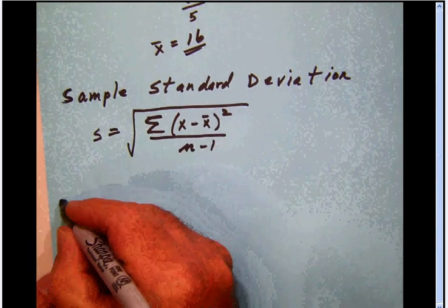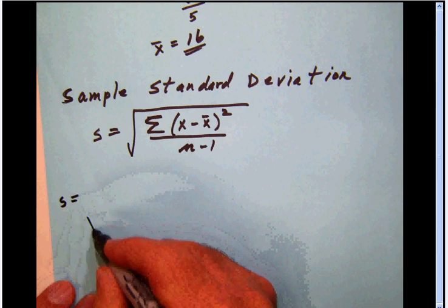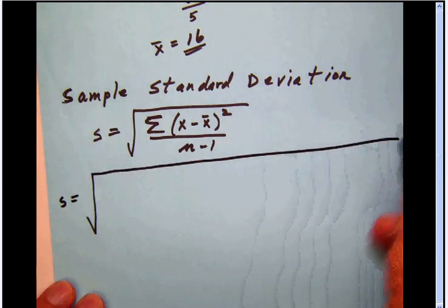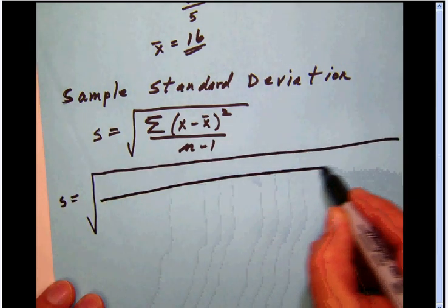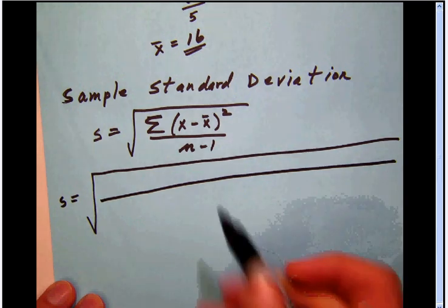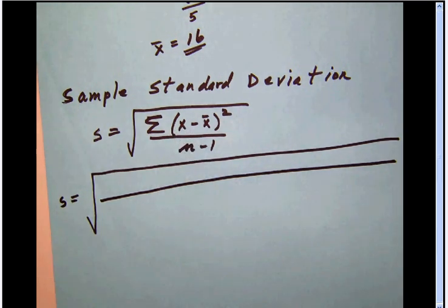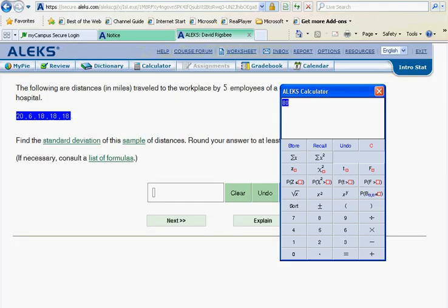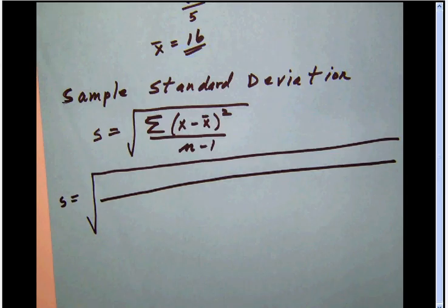What we're going to do is remember that we have this giant square root. Within that square root, we're going to have to each time take our x value. Now that's numbers from our list, so let's go back and look at that. The first number on our list is 20.